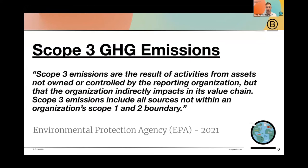The big topic of today is, of course, the scope 3 greenhouse gas emissions. Scope 3 emissions are the result of the activities from assets not owned or controlled by the reporting organization, but that the organization indirectly impacts in its value chain. These are all the activities happening in your value chain that you might not be directly involved with, but that you are able to influence through your relationships with partners.